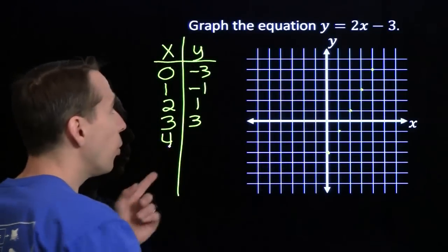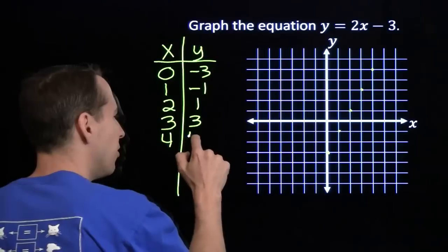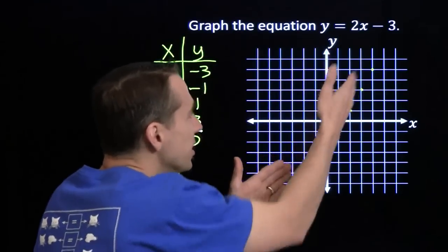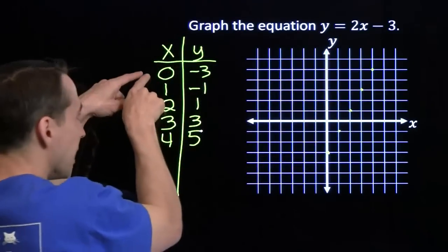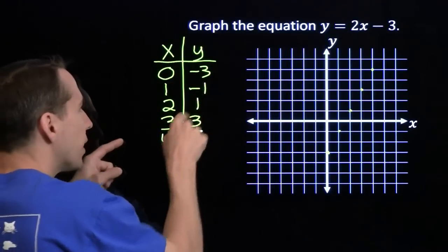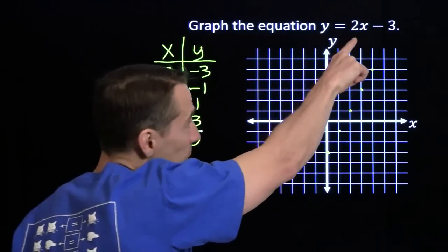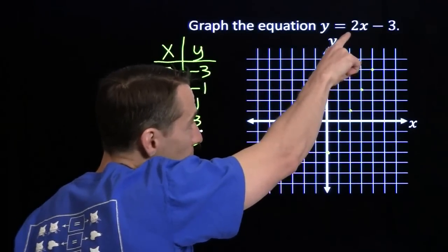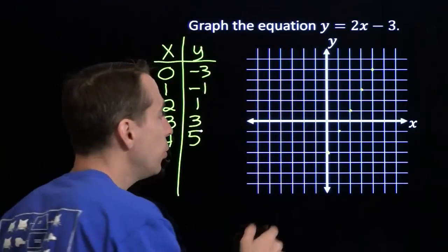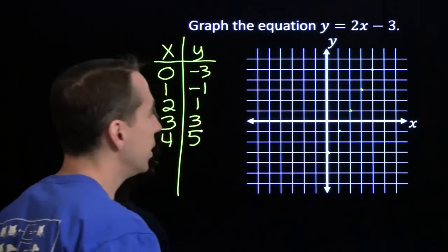I'll put in x equals 4 — 2 times 4 is 8, minus 3 — sure enough, that is 5. And we can see why this is happening: when x goes up 1, y goes up 2. You increase x by 1, we're going to multiply that by 2, and that's going to make y go up by 2. So we can see why the points are laying out in this pattern.